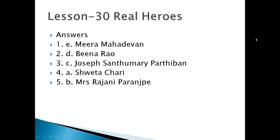Number 3: he helped the poorest of the poor to open a bank account, which set them free from the clutches of moneylenders who charged a very high rate of interest. Who is he? Joseph Santumari Parthivan. Number 4: she started Toy Bank with a vision to give a toy in the hands of every child in India. She gives donated toys to those who cannot afford them and brings smiles on their faces — Swatachari.